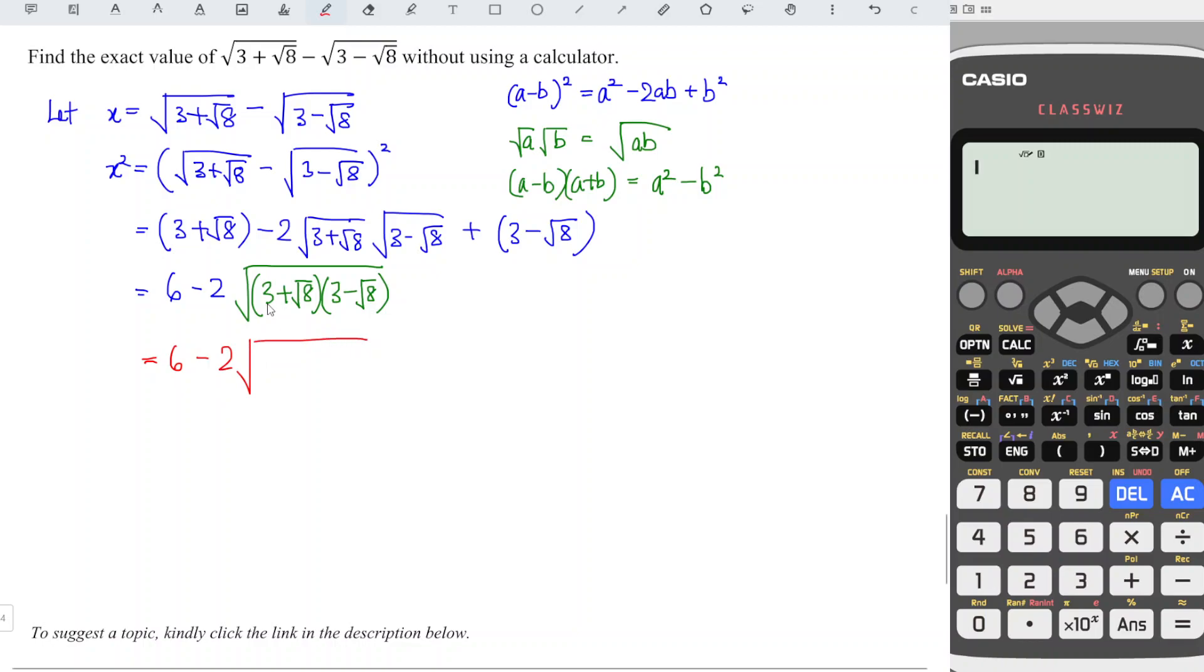This means that we should have 6 - 2√(3² - (√8)²), which equals 6 - 2√(9-8), which equals 6 - 2√1. So √1 equals 1, and hence we should have 6-2, which equals 4.